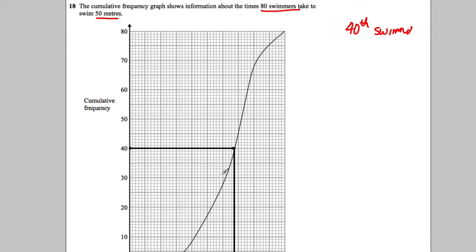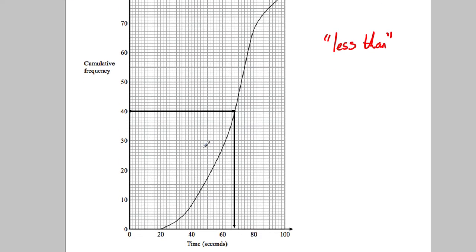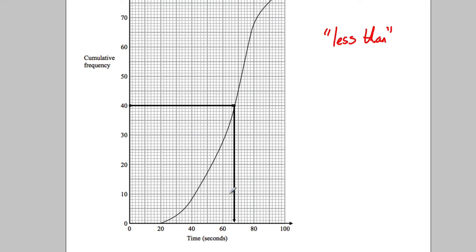Now, the important thing about cumulative frequency graphs, another name for them is less than graphs. Okay, so for example, if I look across, if I was to read up here at 68 seconds, it's telling me that 40 people got 68 seconds or less.